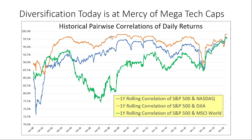You can see the three different correlations here. The blue line is the correlation of the S&P with the NASDAQ. The brown line is the S&P with the Dow Jones Industrial Average. And the green line is the S&P with the MSCI World. Both the green and blue lines are at about 97.5% today.